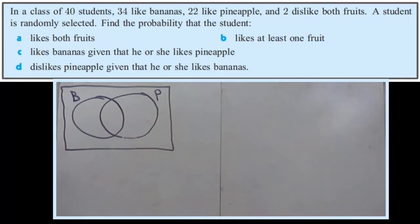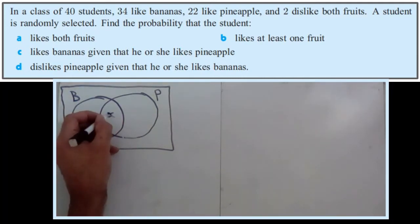With any Venn diagram question, you should start from the middle. The middle we don't know. We know that we don't know it, firstly because there's nothing in those first two lines that tells us how many like both fruits, bananas and pineapples. And secondly, because it is question A, what's the probability that a student likes both fruits? So that must be unknown. If it's unknown, we're just going to call it X there.